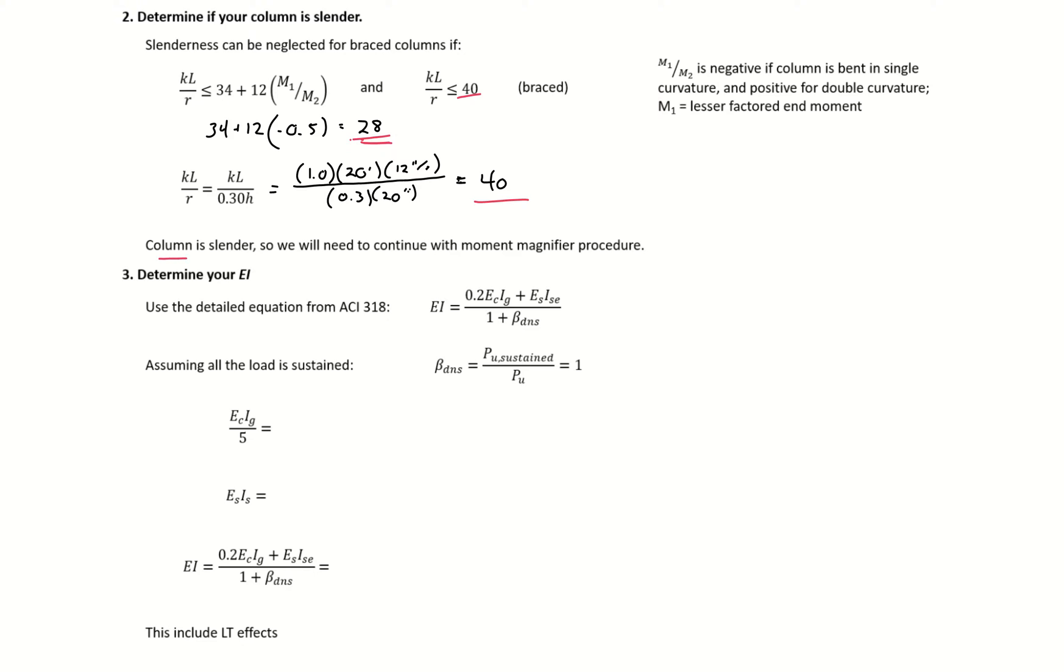We need to continue with our moment magnifier procedure. Next we calculate our EI for our section. We're going to use the detailed expression from ACI, which includes both a concrete and steel component for our stiffness.